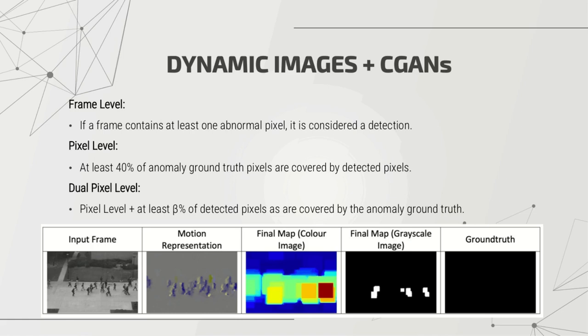There are three standard ways to constitute detection of abnormality in a frame. Frame level requires at least one abnormal pixel for a whole frame to be considered abnormal. Pixel level requires that at least 40% of the anomaly ground truth pixels are covered by the detected pixels. Dual pixel level, which is newer, applies the pixel level constraint and additionally requires that at least beta percent of detected pixels are covered by the anomaly ground truth pixels. Frame level and pixel level are what is usually used by other researchers. Input frames are given to the proposed network, different motion representations are extracted, and a final map is obtained and compared to ground truth using any of these detection constraints.